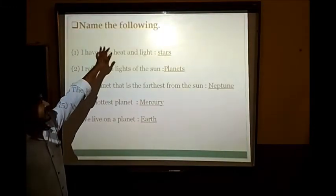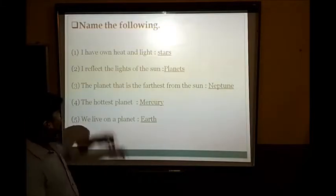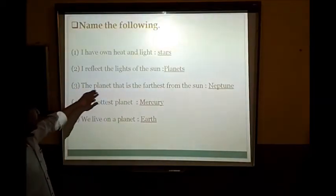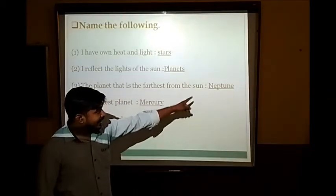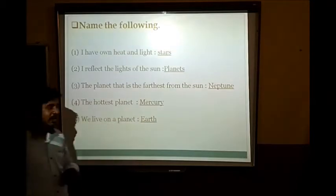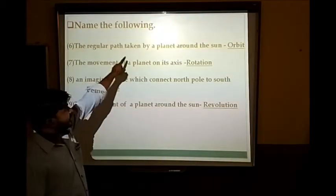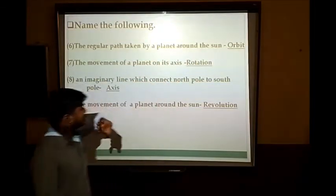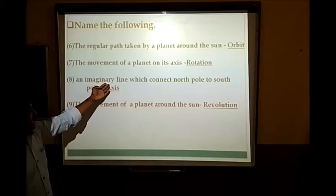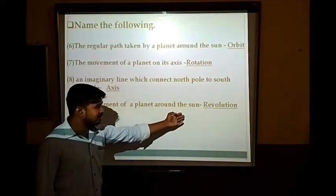Let's see the exercise. Match the following: I have my own heat and light — Stars. I reflect the light of the sun — Planet. The planet closest to the sun — Mercury. Earth is the only planet known to have life. The planet farthest from the sun — Neptune. The hottest planet — Venus. We live on — Earth. The regular path taken by a planet around the sun — Orbit. The movement of a planet on its axis — Rotation. The imaginary line which connects north pole to south pole — Axis. The movement of a planet around the sun — Revolution.